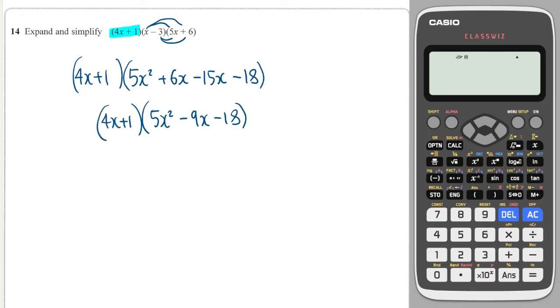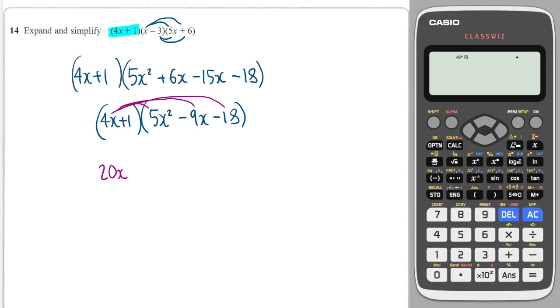And I'm going to multiply along the top first, so everything by 4x, which is going to give me 20x cubed. Next one is 4x times minus 9x, which is minus 36x squared.